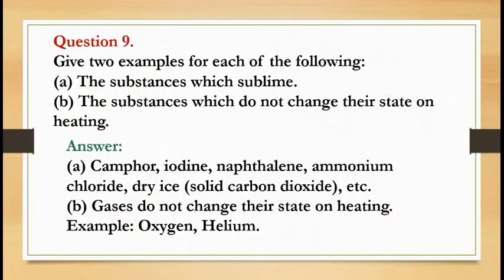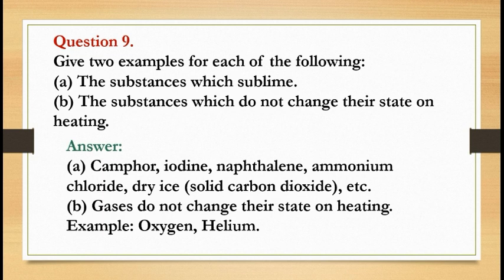Question number 9: Give two examples for each of the following. A: Substances which undergo sublimation — camphor, iodine, naphthalene, ammonium chloride, dry ice (solid carbon dioxide), etc. B: Substances which do not change their state on heating — gases do not change their state on heating. Examples: oxygen and helium.